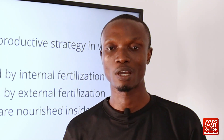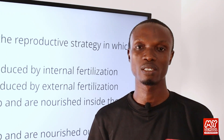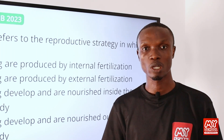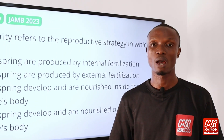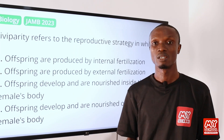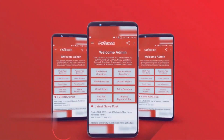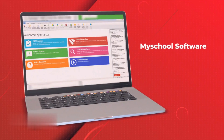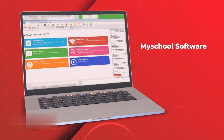Did you know that you can take practice questions with our simulated JAMB CBT past questions? All you need to do is click on the link in the description below, and this will take you to my school website. There you can download the MySchool mobile app for your Android devices and MySchool software for your laptops and computer. Please go ahead and start practicing.